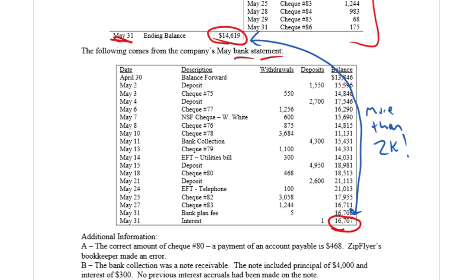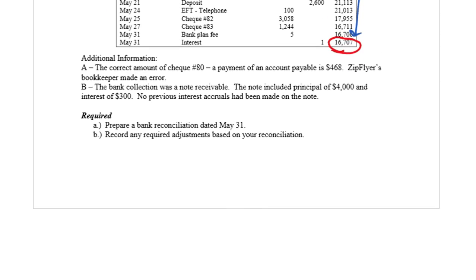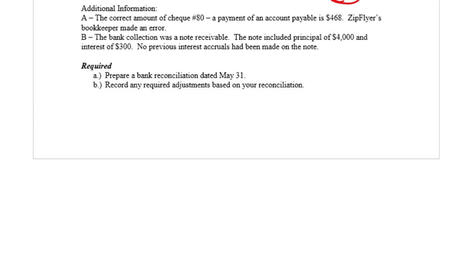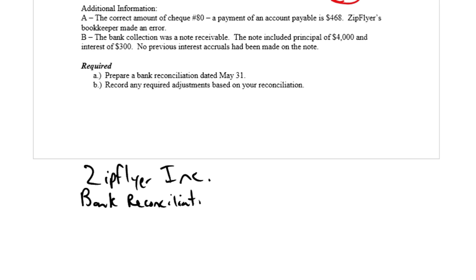So let's get to work on preparing a bank rec. Whenever we prepare any type of statement in accounting, we always start with a title — this is no exception. The name of our company is ZipFlyer Inc. So just like any other financial statement, we start with a three-line title: ZipFlyer Inc., we're preparing a bank reconciliation, and we date it May 31st. You can include the year if you'd like, but you don't have to. And so we're ready to go with our bank reconciliation.